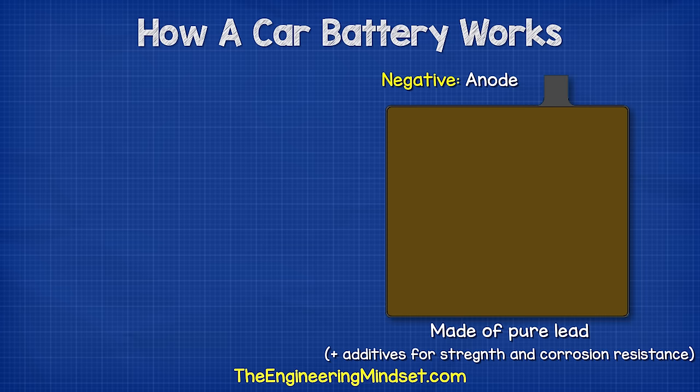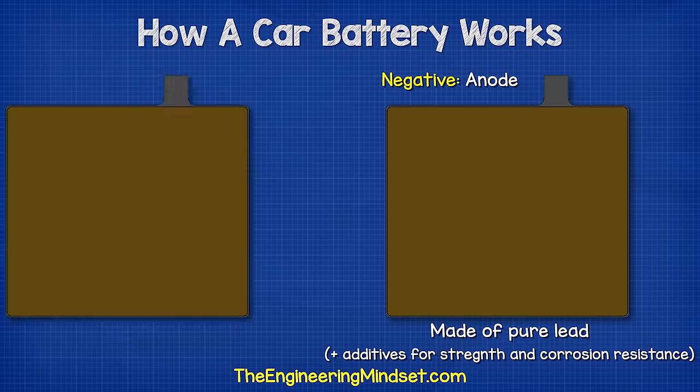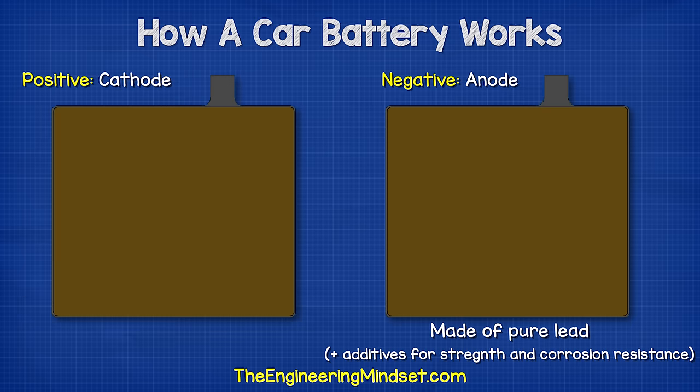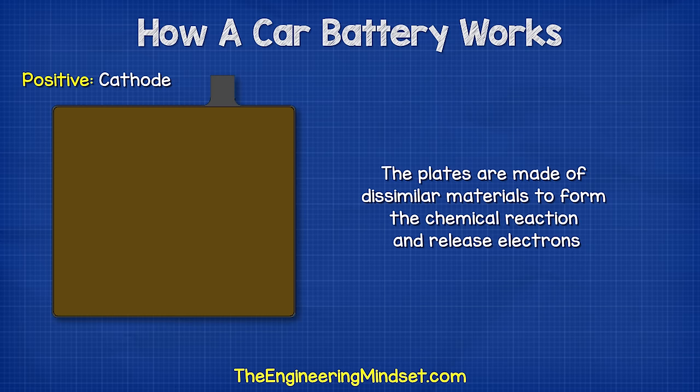Although some small amounts of additives are added to harden the lead and protect it from corrosion, the positive plate is the cathode, which is made from lead oxide. The plates are made of dissimilar materials to form the chemical reaction and release the electrons.